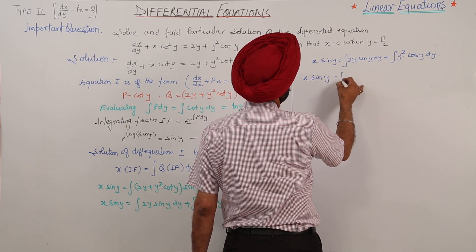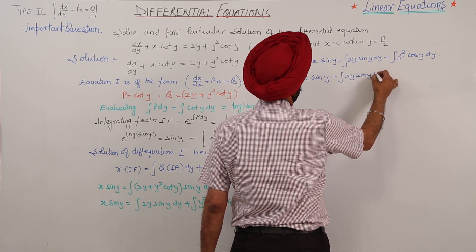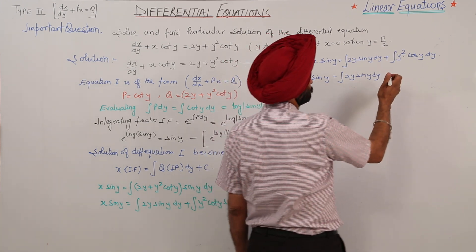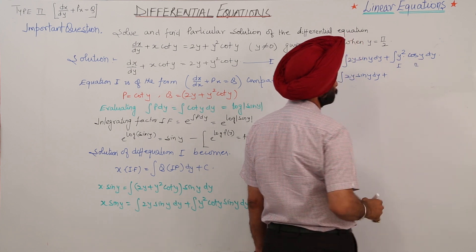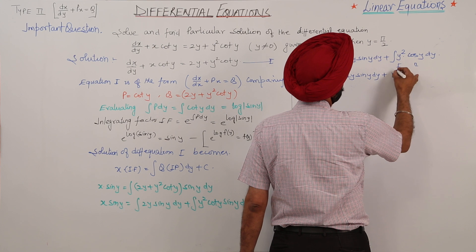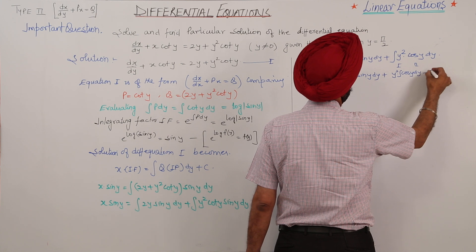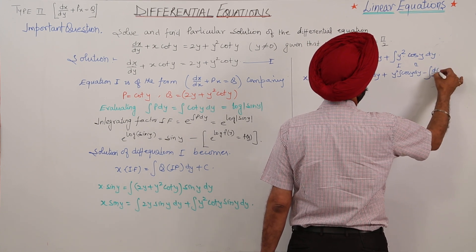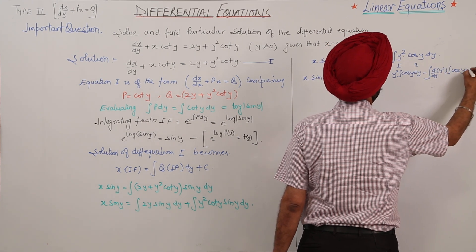x sin y equals the integration of 2y sin y dy plus the integration of y squared cos y dy. Now I am not integrating the first term yet. Applying integration by parts on the second integral, taking y squared as the first function and cos y as the second function: y squared times sin y minus the integration of 2y times sin y dy.